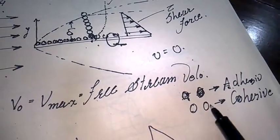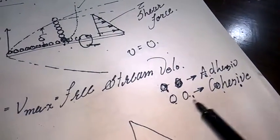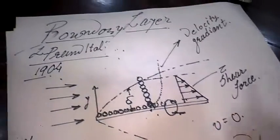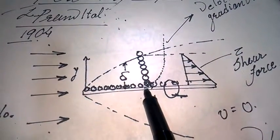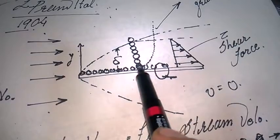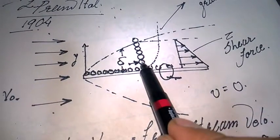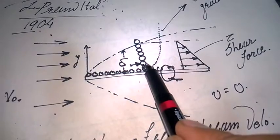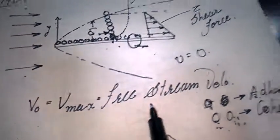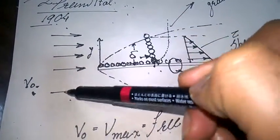Another thing is that the fluid particles also feel cohesive forces — cohesive force works between the same particles or same molecules. The fluid particle at y = 0 forms the first row of stagnant particles, while the particle on the upper side is going with V₀, which we call the free-stream velocity: V₀ = V_max = V_free_stream.